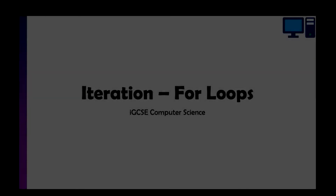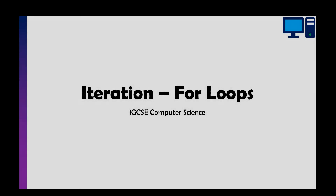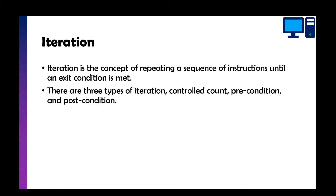In this video we're going to take a look at iteration, more specifically for loops, for algorithms and programming for IGCSE computer science. First things first, what is iteration? The definition you need to know for the exam board is: iteration is a concept of repeating a sequence of instructions until an exit condition is met. In other words, it's a loop — where we keep doing something until it needs to stop, usually through some kind of condition.